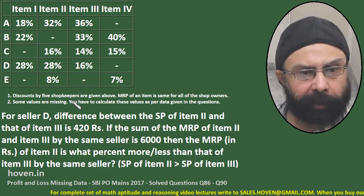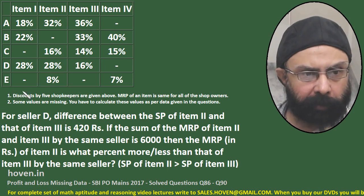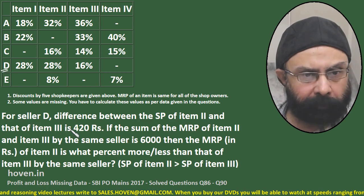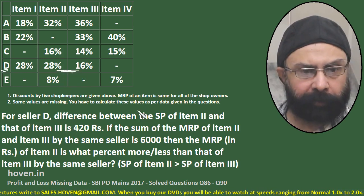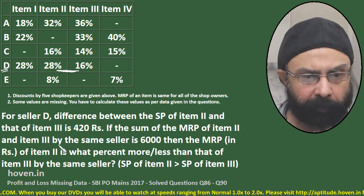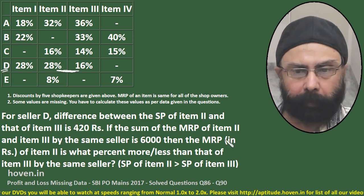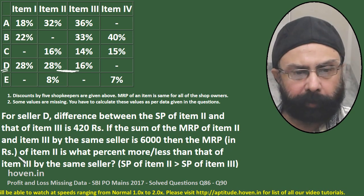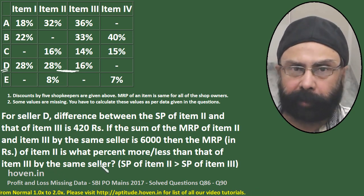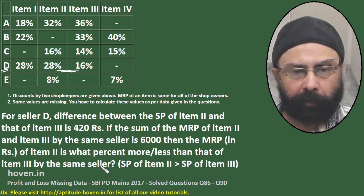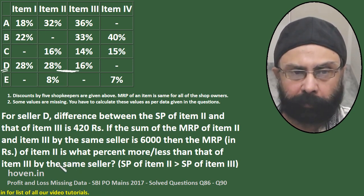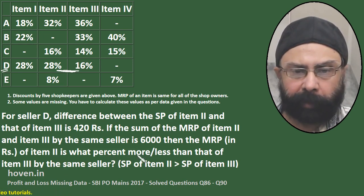This question says: for seller D, the difference between the sale price of item 2 and item 3 is 420. If the sum of MRP of item 2 and item 3 by the same seller is 6000, then the MRP in rupees of item 2 is what percent more or less than that of item 3 by the same seller. So we need to find a relation between the MRP of item 2 and item 3.